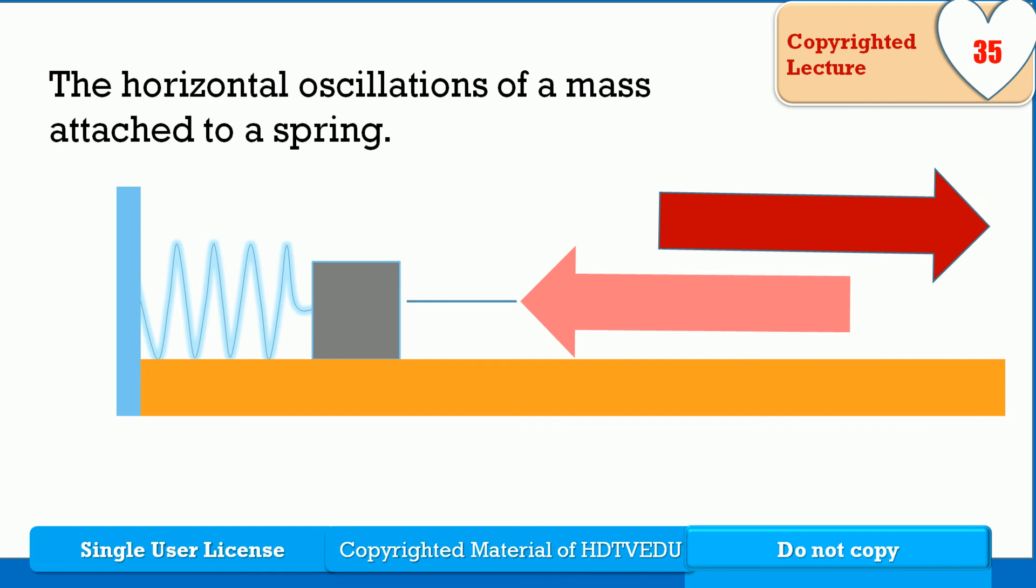The horizontal oscillation of a mass attached to a spring as it slides from left to right and back. That is linear motion.